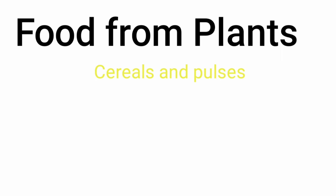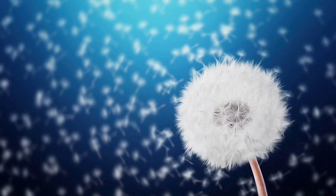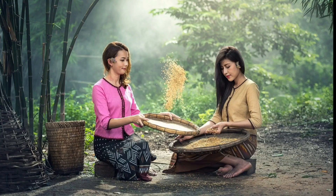Let's begin with food from plants — cereals and pulses. Cereals are seeds mostly obtained from grasses. Barley, wheat, maize, millet, oats, rice, and rye are all examples of cereals.